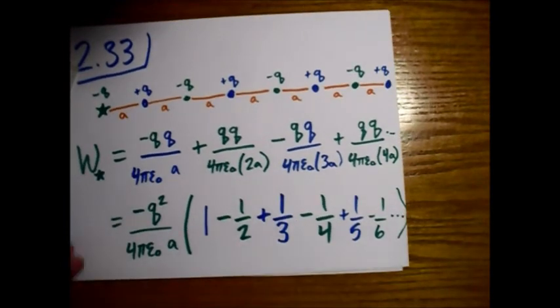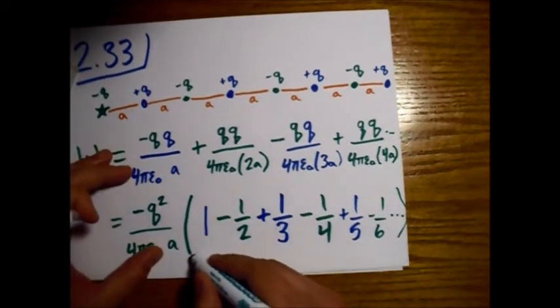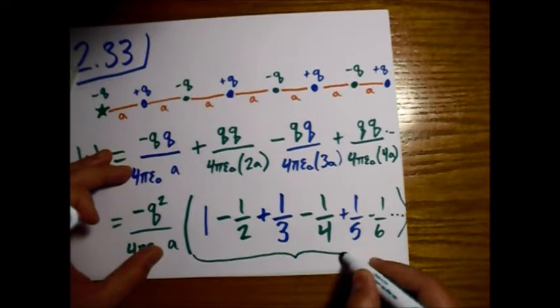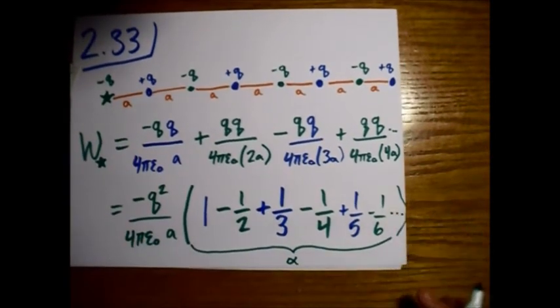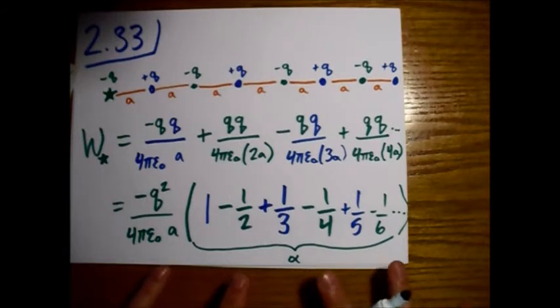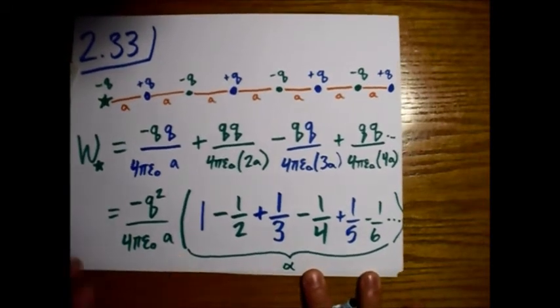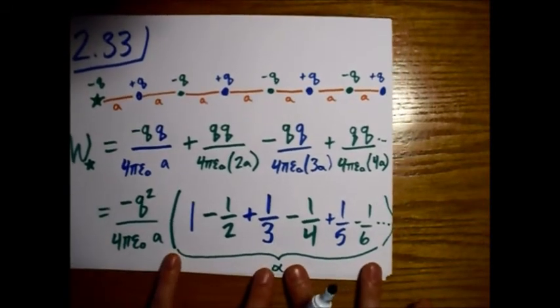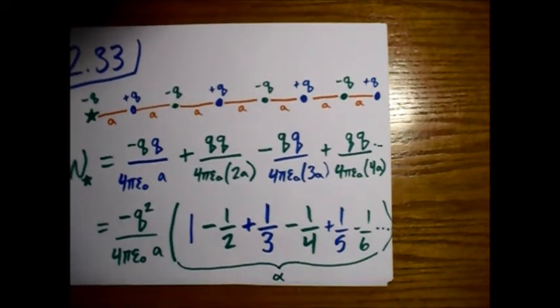So this is the constant alpha, which Griffiths refers to in the problem statement. This is the alpha that he's looking for. And I'm rusty on my infinite series. I took calculus a long time ago, so I just looked this up online. This one converges to the natural logarithm of 2.